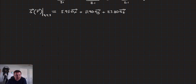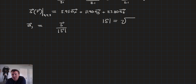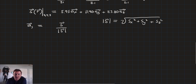Now let's find the unit vector — let's find a_s at that point. Remember, that's going to be equal to S over the magnitude of S. So the first thing we ought to find is the magnitude of S. Remember, from the previous lesson, that's equal to the square root of the x-component squared, plus the y-component squared, plus the z-component squared. We already have those values — that's our S_x, S_y, and S_z.